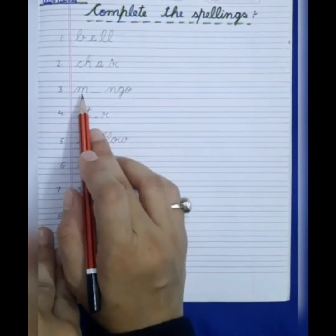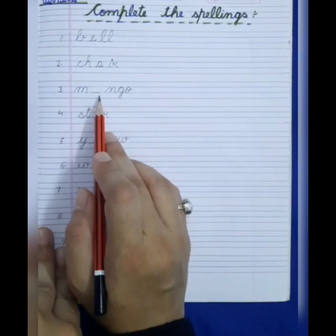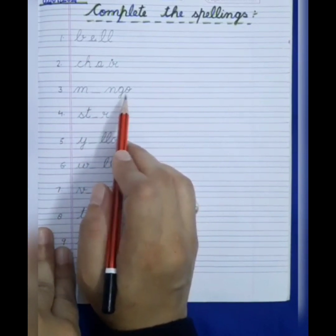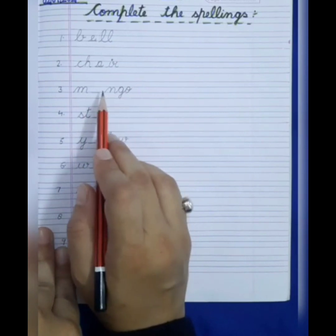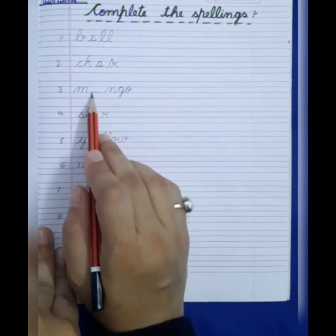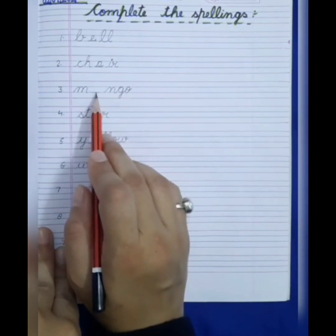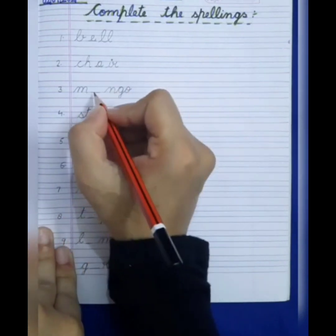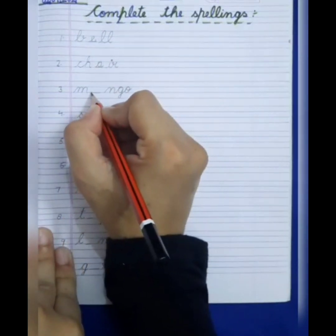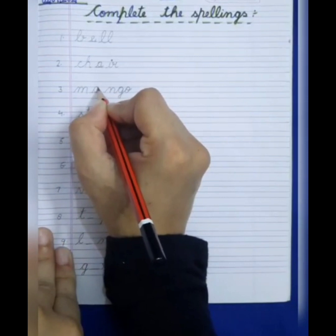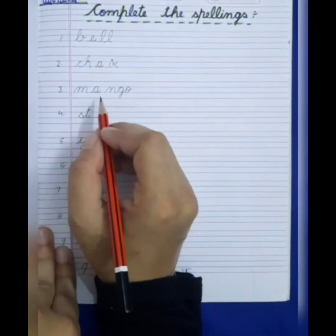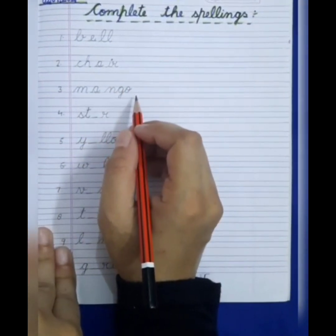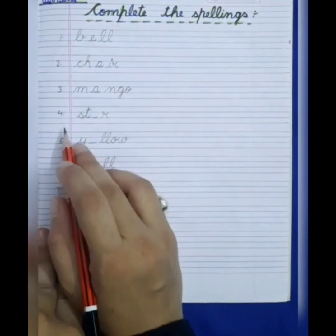Now next, number 3. The spelling is mango. So what is the complete spelling of mango? What will come in this blank? M-A-N-G-O, mango.